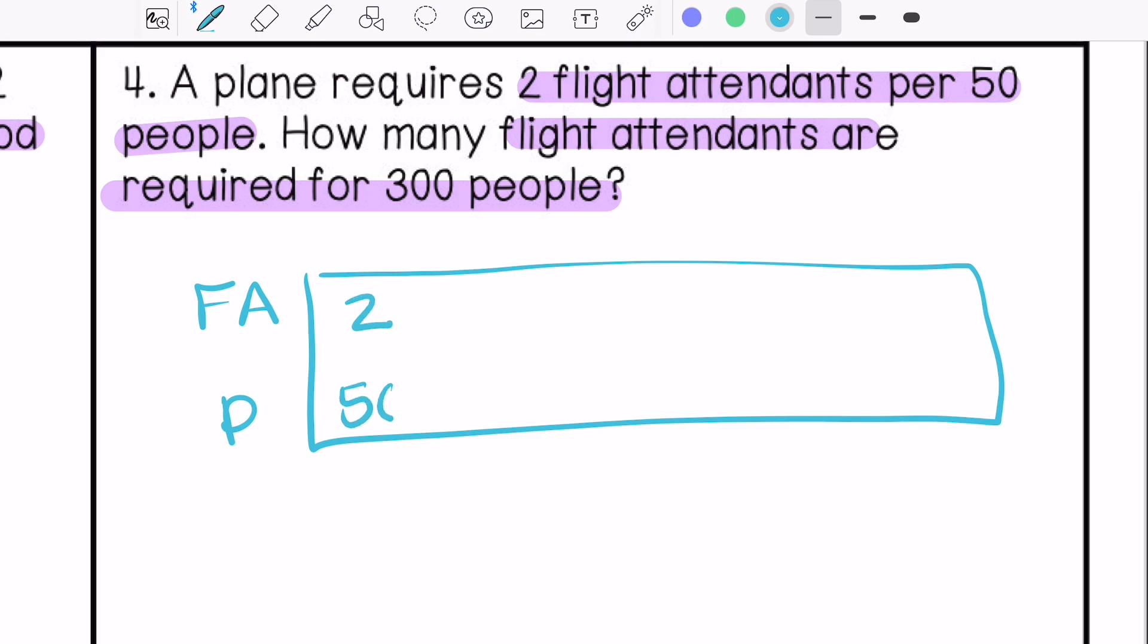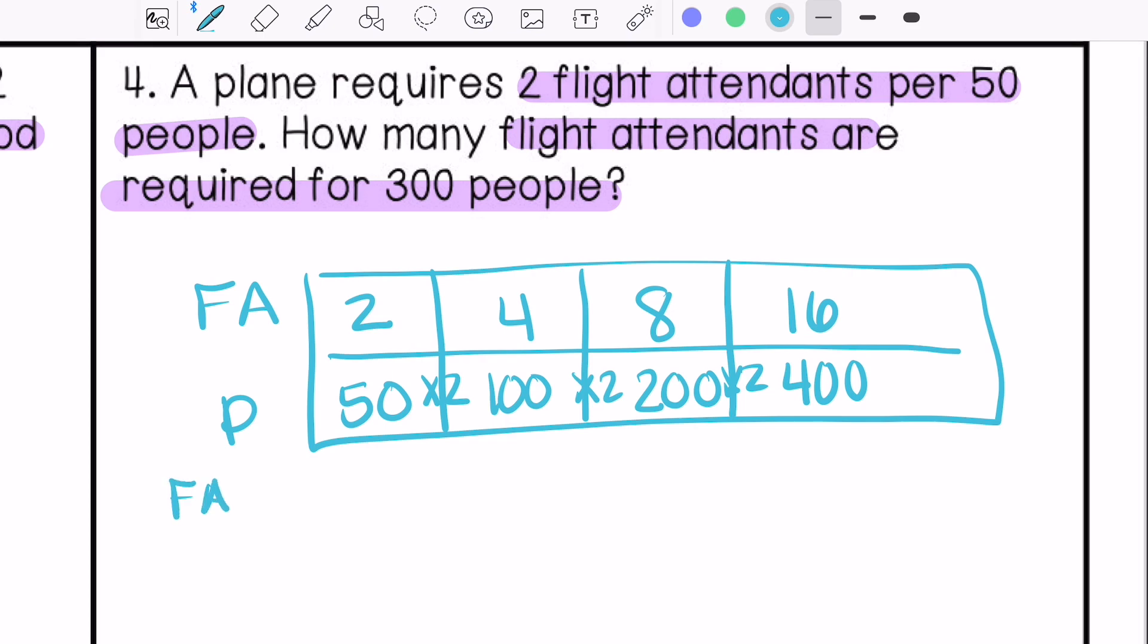Two flight attendants per 50 people. If we multiply by two here, it's 100 people, four flight attendants. Multiply by two, 200 people, that would be eight flight attendants. So we need to take maybe a little bit different approach.